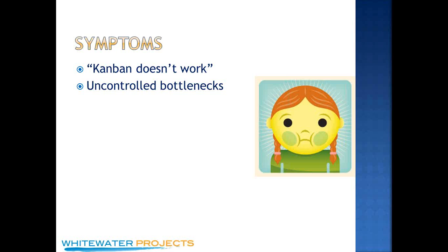WIP limits are how we control bottlenecks. Maybe it's in testing — your developers are just developing, developing, developing, and then dump a bunch of stuff on your testers. That is an uncontrolled bottleneck. There's this huge pile in front of the testers and they can't work their way through it fast enough to keep up. People get frustrated. Developers are working their tails off to deliver features, but it's not getting tested. And then someone says, okay, we'll just skip testing. No! That's the symptom of not having a WIP limit — you don't have controls.